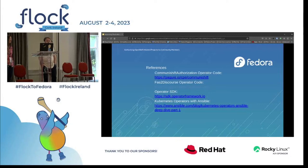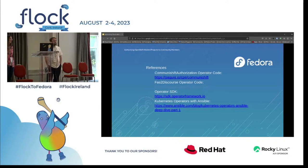I'd encourage anyone to look into the Operator SDK and especially the Ansible operators you can produce, because you can access pretty much anything in the OpenShift API and it's a really nice framework. Rather than rolling your own API, you could just use and extend OpenShift or Kubernetes opportunities. Thanks everyone!